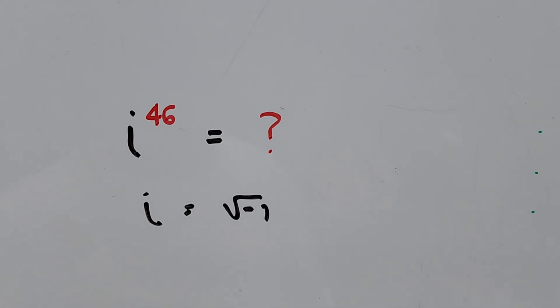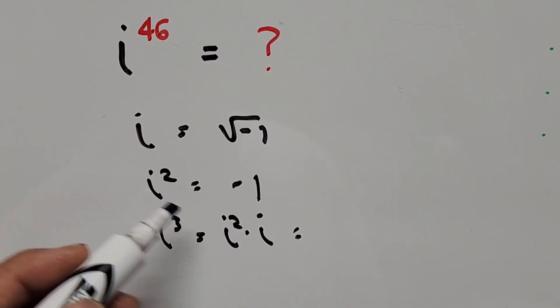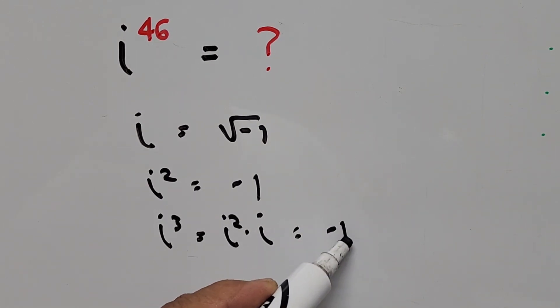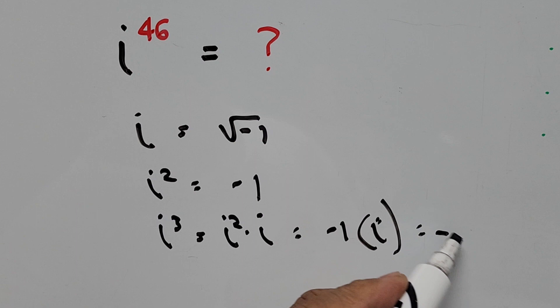First we start with the value of imaginary number, that is square root of negative 1. We go to i squared, that will be negative 1, and i cubed will be i squared times i. So here i squared is negative 1, so this is negative 1 times i, which is negative i.